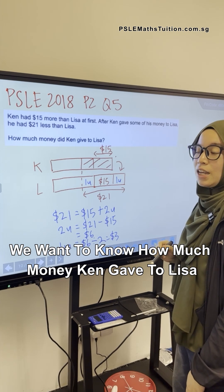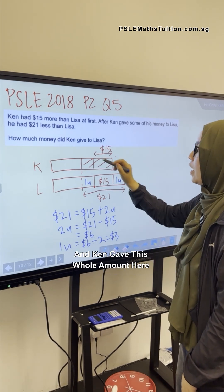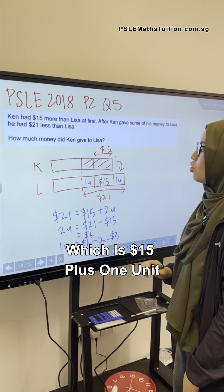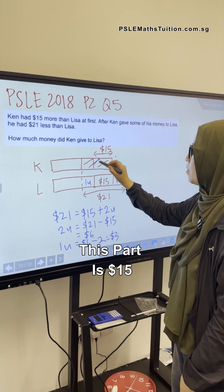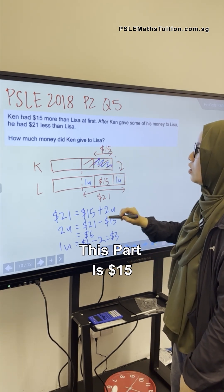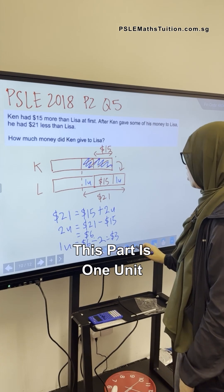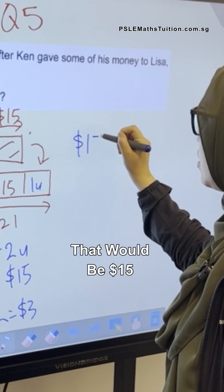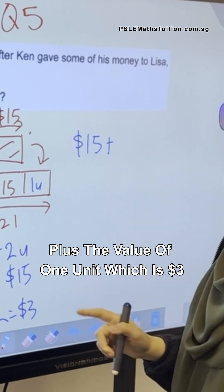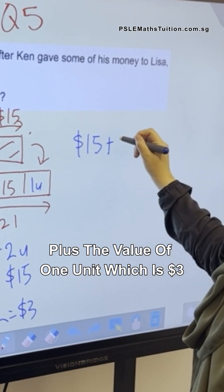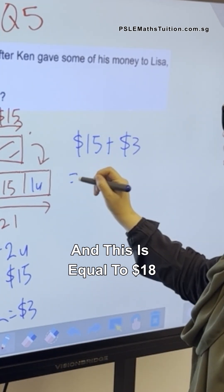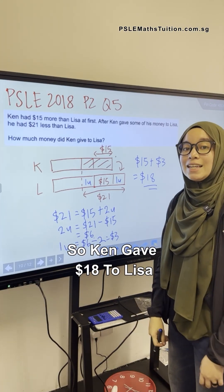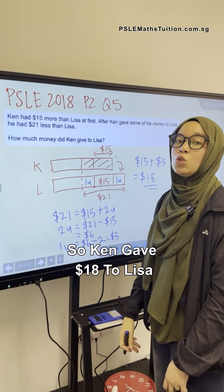So now we know that one unit is $3. We want to know how much money Ken gave to Lisa. Ken gave this whole amount here, which is $15 plus one unit. This part is $15, this part is one unit. That would be $15 plus the value of one unit, which is $3, and this is equal to $18. So Ken gave $18 to Lisa.